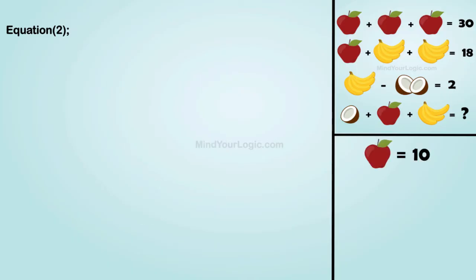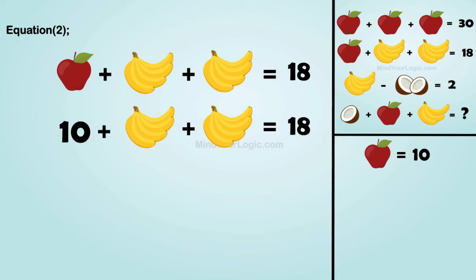Now, equation 2: apple plus banana plus banana equals 18. Substituting the value of apple, we get banana equals 4, and it is 4 bananas together.